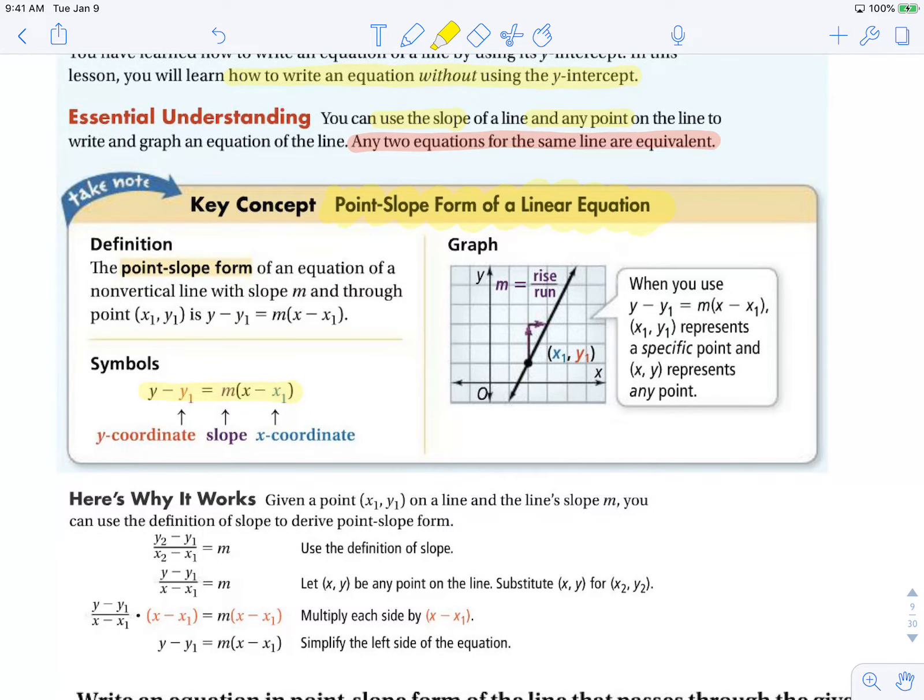So let's think about why this equation even works. And it's connected to the slope formula. So we know that slope m is y2 minus y1 over x2 minus x1. But what we can do is instead of using two points...